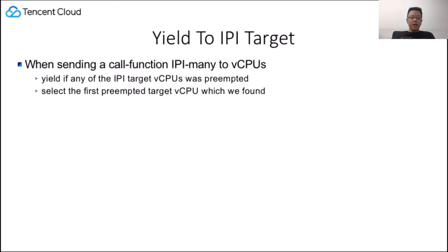The last mechanism is a new hypercall to yield to the IPI target. When sending a call function IPI many, the vCPU yields if any of the IPI target vCPUs was preempted. We select the preempted target vCPU which we found, since the state of the target vCPU can change underneath, to avoid race conditions.